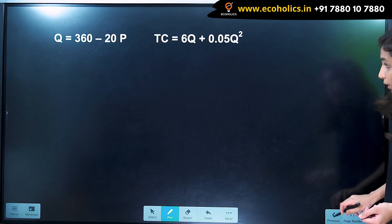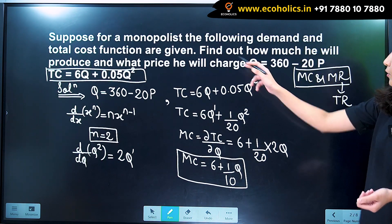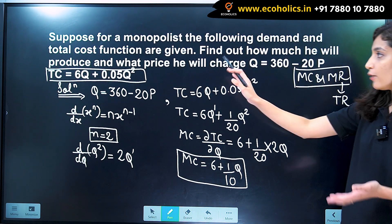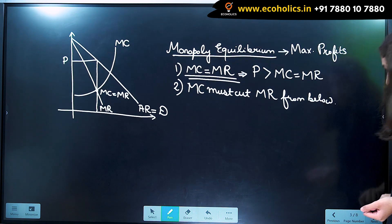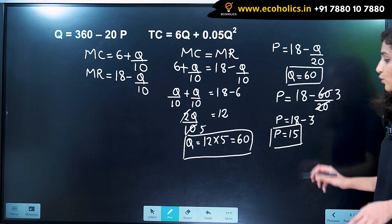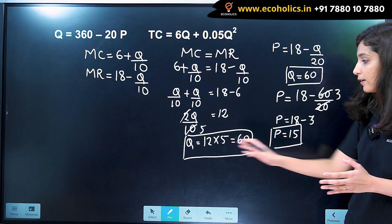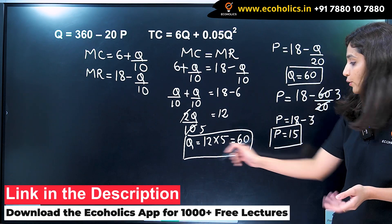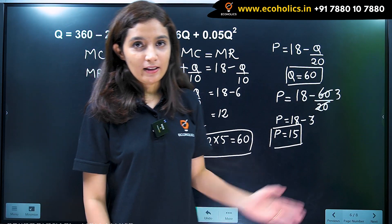The question asked: find out how much he will produce and what price he will charge. The monopolist will produce 60 units and will charge a price of 15 rupees. This completes our answer.